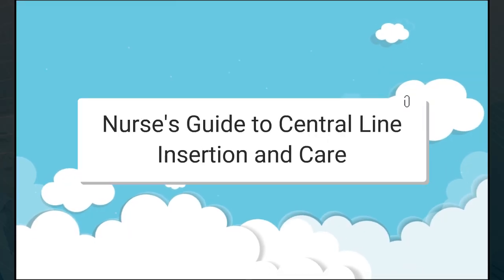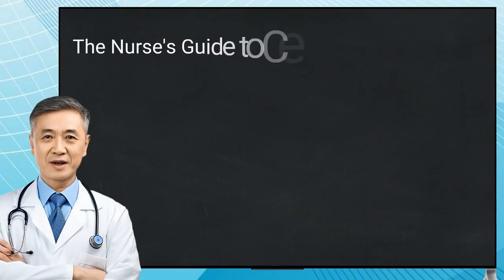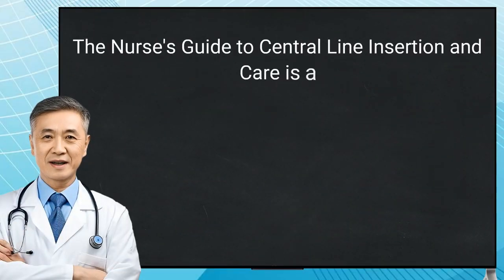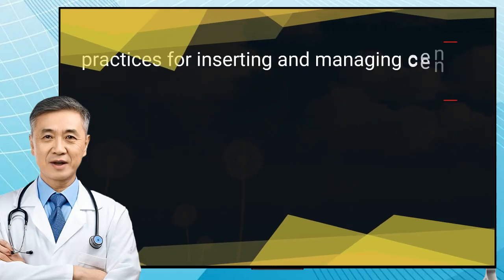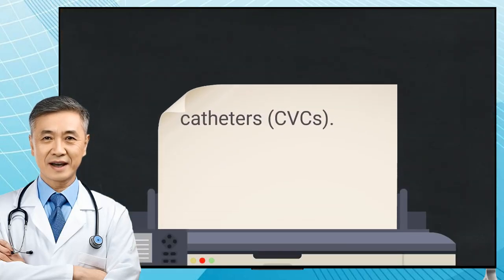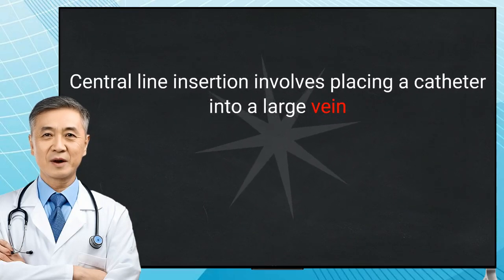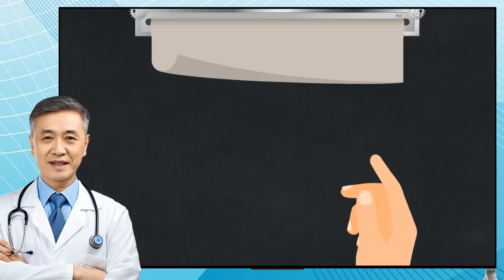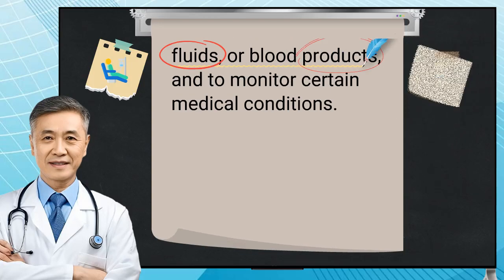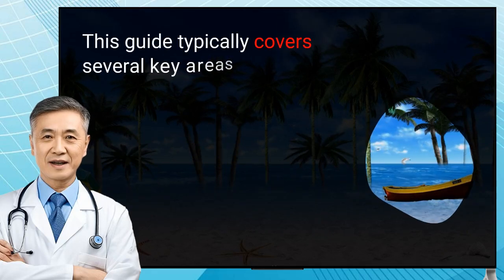The Nurses Guide to Central Line Insertion and Care is a comprehensive resource designed to educate nurses on best practices for inserting and managing central venous catheters, CVCs. Central line insertion involves placing a catheter into a large vein, typically in the neck, chest, or groin, to administer medications, fluids, or blood products, and to monitor certain medical conditions. This guide typically covers several key areas.